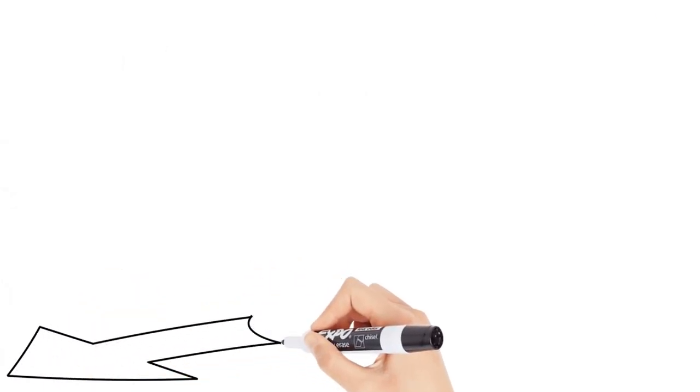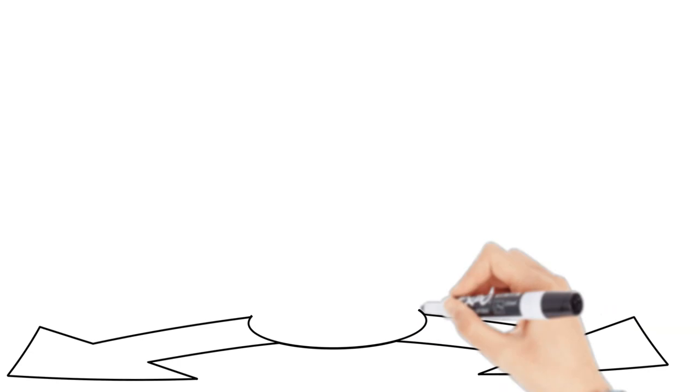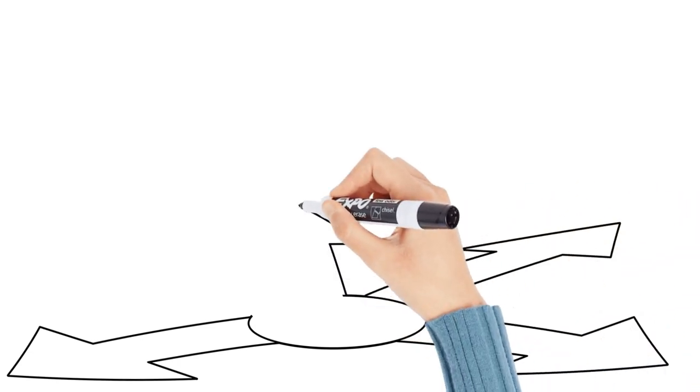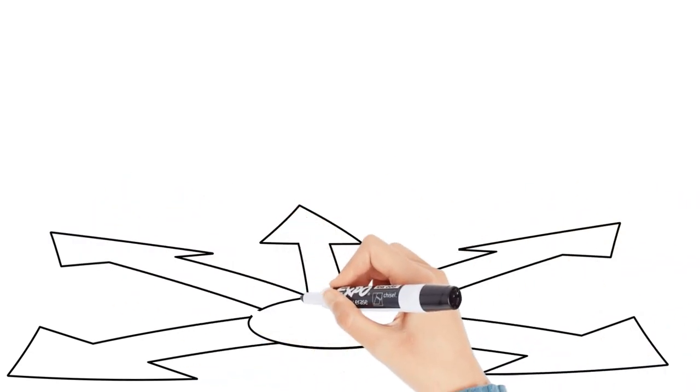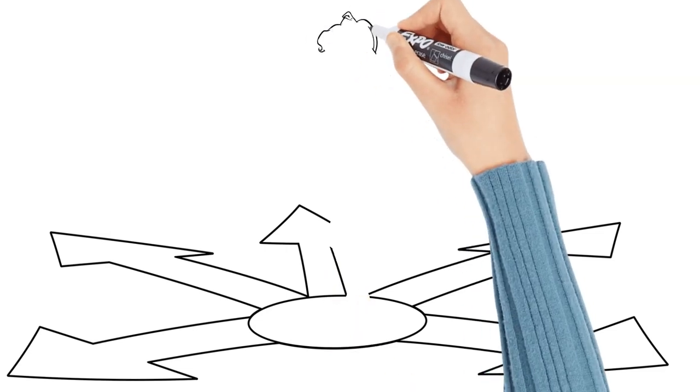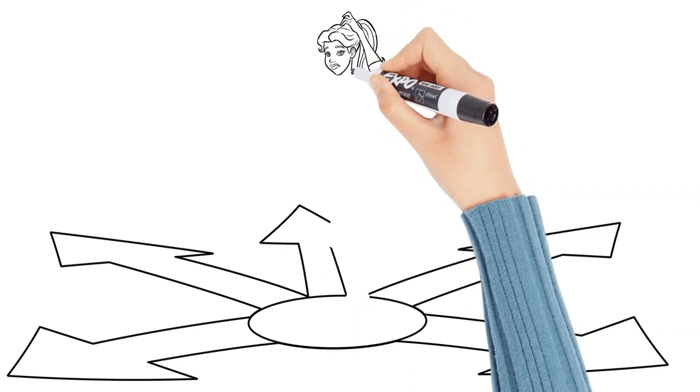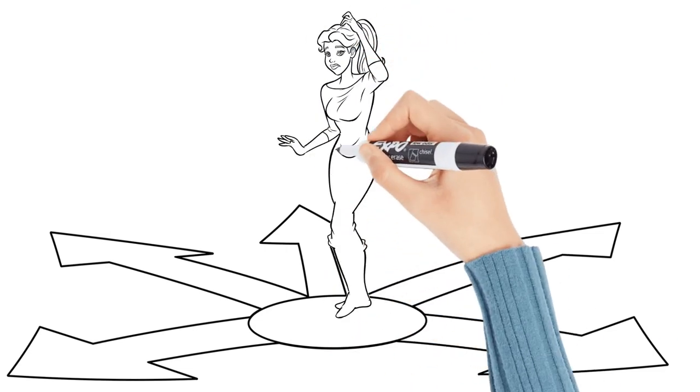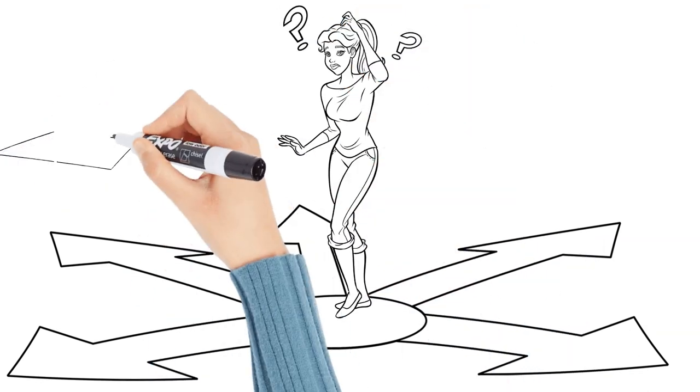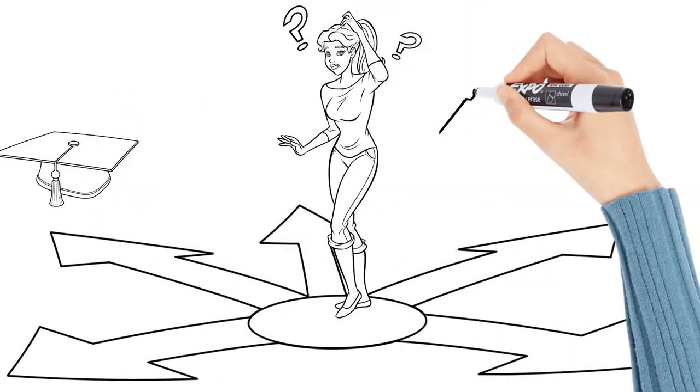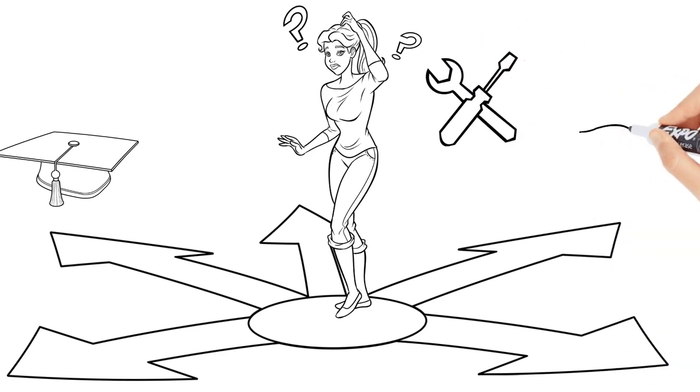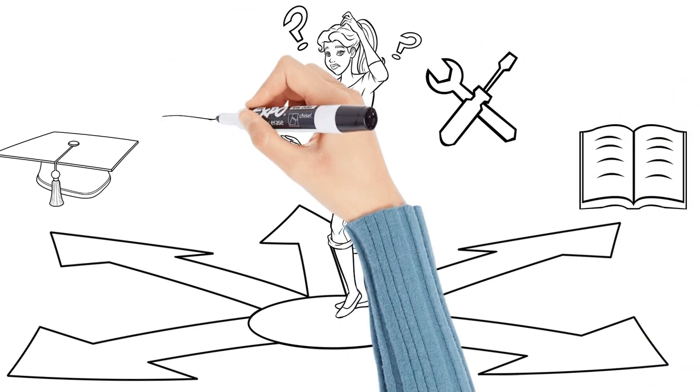Do think about what you might want to do after Key Stage 4 finishes, whether that's A Levels, T Levels, Apprenticeships or University, and find out if the subjects that you're considering now will allow you to take that path. If you're not yet sure that far ahead in your future, then it's a good idea to keep your options broad and balanced.